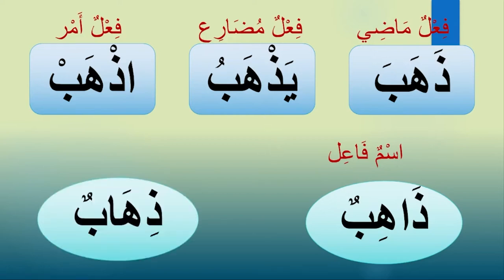The other form we have today is ذهاب. ذهاب is مصدر. المصدر is the noun that is taken from the verb, and it is translated like 'going.'